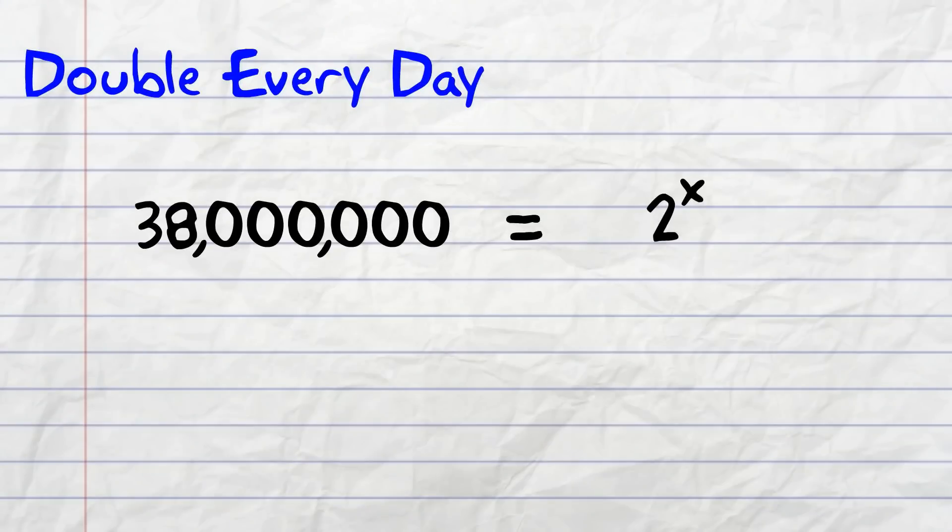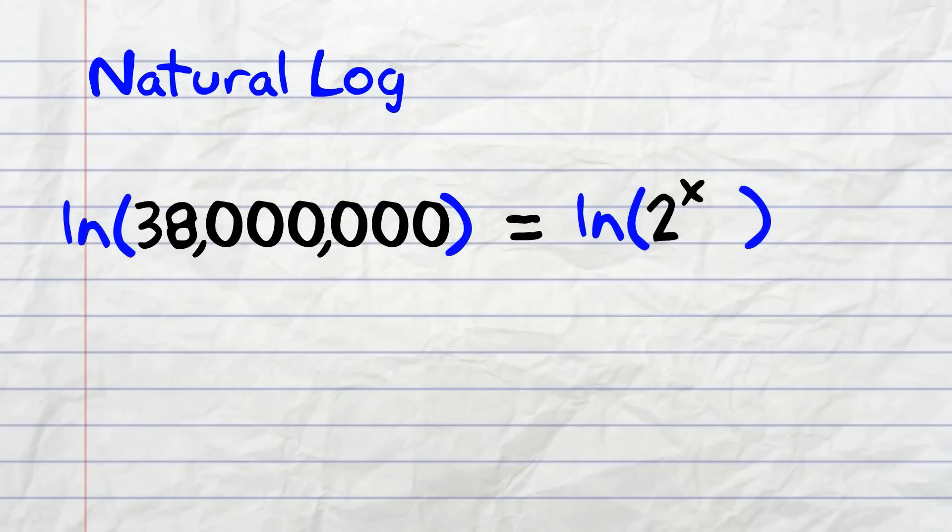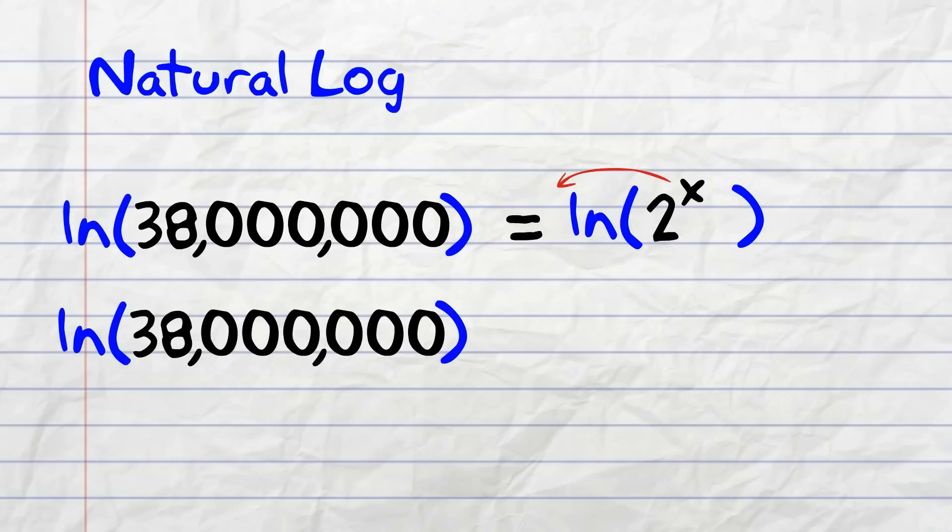Solving an exponential equation requires us to take the natural log of both sides. Now, there are many properties we get to use when it comes to natural logs. The one we want is the fact that this exponent here can be brought down in front, giving us natural log of 38 million equals x times natural log of 2.